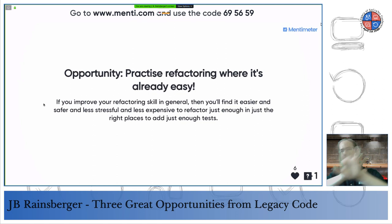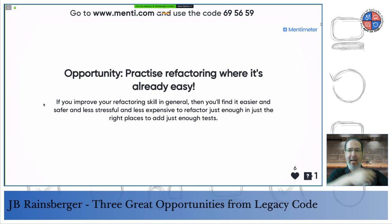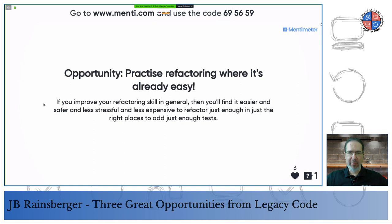Most programmers don't get to the point where they can move code around easily because they waste too much energy trying to remember how to rename, how to change method signatures, when to run the tests, when to commit. Practice those mechanics in areas where it's already easy — spend an hour or two on familiar code focusing strictly on: commit on every green bar, when to run tests, or following the classic refactoring book's step-by-step instructions for moving a method from one class to another safely by hand.